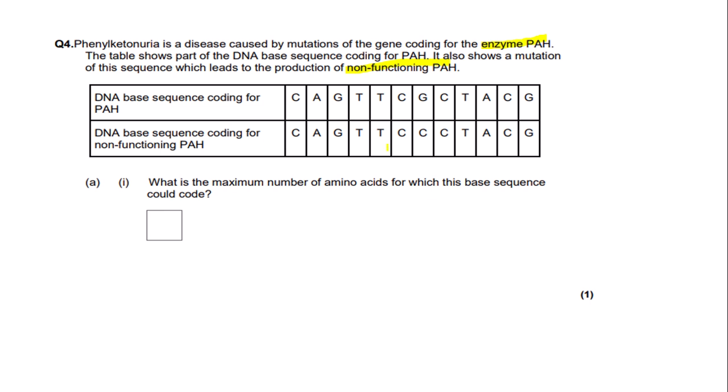The question asks: what is the maximum number of amino acids for which this base sequence could code? If you're familiar with protein synthesis, you'll know that three bases code for one amino acid — triplets of bases encode an amino acid, and these are also called codons. So what we need to do for this question is look at how many triplets there are in this sequence.